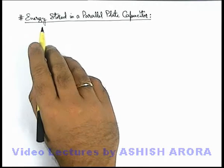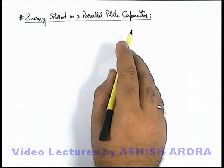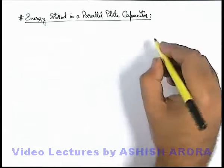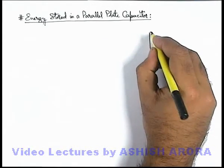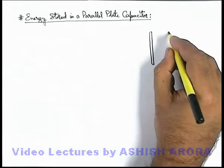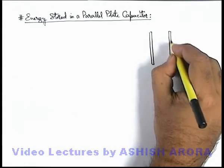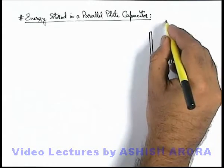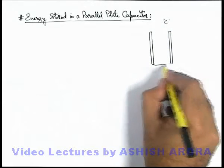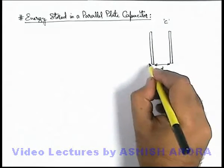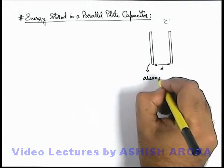Let us discuss the energy stored in a parallel plate capacitor. In the previous section we discussed the charging of a parallel plate capacitor. Say we are given a parallel plate capacitor of capacitance C, with plate separation d, and each plate area equal to A.